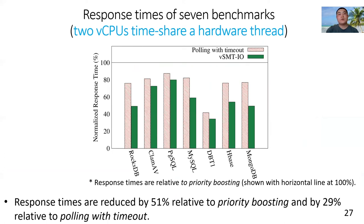On average, relative to priority boosting, vSMTIO can reduce response times by 51%, and polling with timeout can reduce response times by 29%. This shows vSMTIO can greatly improve IO responsiveness and IO performance compared with priority boosting and polling with timeout.